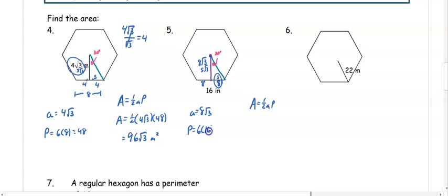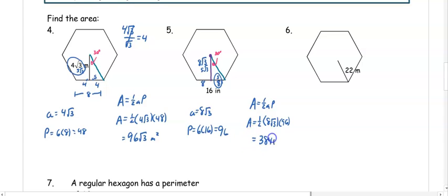The perimeter has six sides each of length 16, giving a perimeter of 96. So the area is one half times 8 root 3 times 96, which gives us 384 root 3 inches squared.